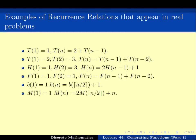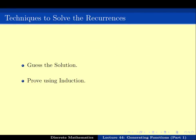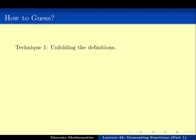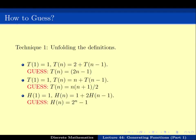We have seen a few examples of recurrence relations and for some of them we have seen techniques of solving them. To quickly recap: the first technique was to guess the solution and then prove it using induction. This works perfectly if you can guess the solution correctly — proving it by induction is then quite simple. But sometimes the question is how do you guess the solution. One technique for guessing was by unfolding the definition, and we saw how that allows one to guess the solution correctly.